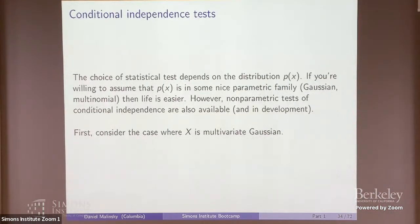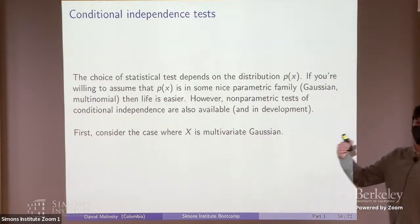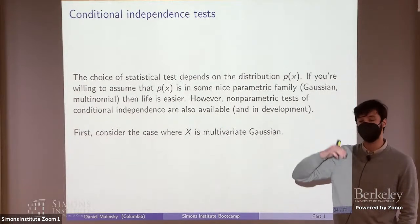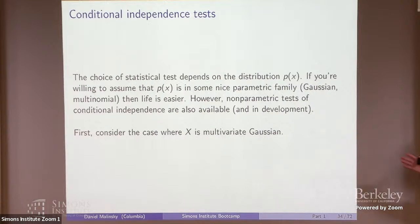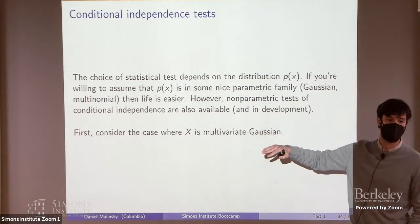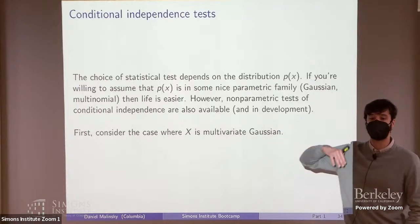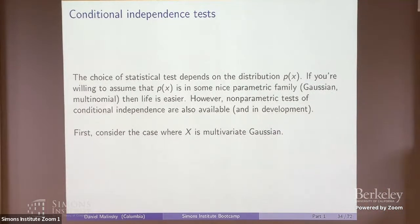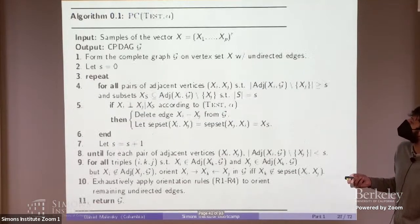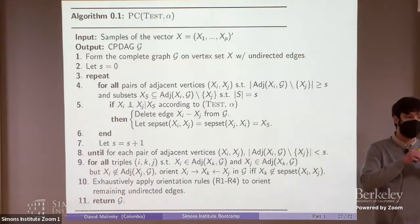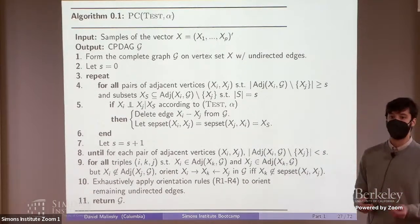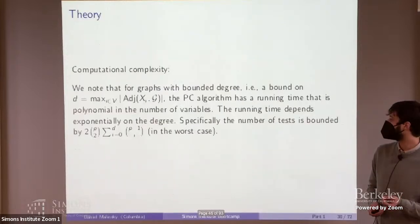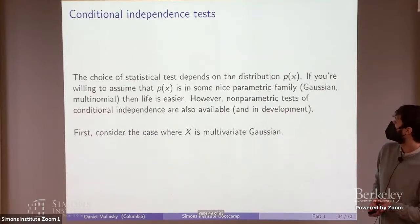One thing that makes PC and related constraint-based methods continuously relevant is that you can be as nonparametric as you want to be, at least in principle. If I plug in a nonparametric conditional independence test satisfying certain properties, I make no parametric assumptions in the course of PC itself. Everything in PC is phrased in terms of conditional independence, which is a nonparametric concept, and I can implement it using nonparametric tests if I choose.